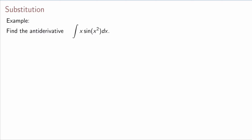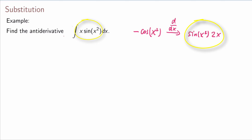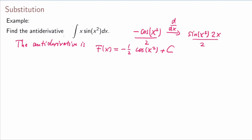Find the antiderivative: integral of x·sin(x²) dx. We can't just look at it — we need to do some thinking. We know the antiderivative of sine is minus cosine, so we try minus cos(x²). Differentiating that gives sine(x²) but also an inner derivative 2x from the chain rule. We're close — only the factor 2 is in the way — so if we divide everything by 2, we get the antiderivative.